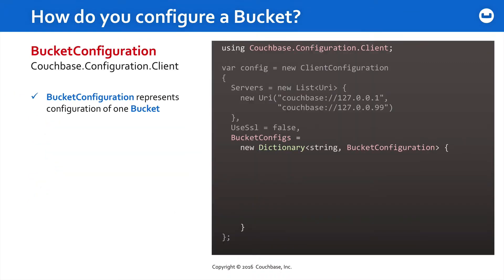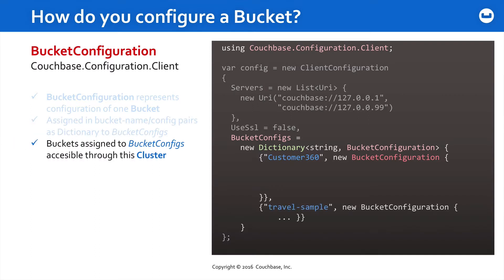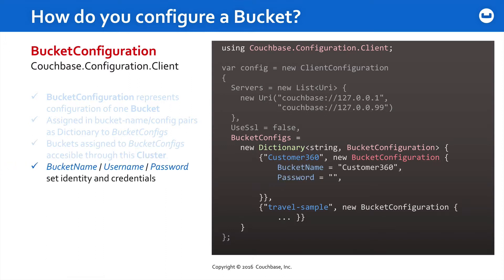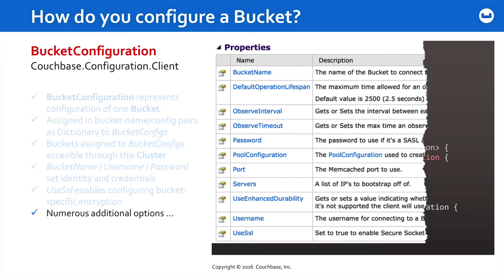Once you have that set up, you need to think about the buckets. Within the config object, you can assign a BucketConfigs property, which is a dictionary of name-value pairs of individual bucket configuration objects. This is how we identify within the config object the name of each bucket, and then a group of settings for each bucket available to this client — for example, customer360 with a config, travel-sample with a config. You can also have name and password control at the bucket level, SSL at the bucket level, lifespan intervals, timeouts, pool configuration, and so on.